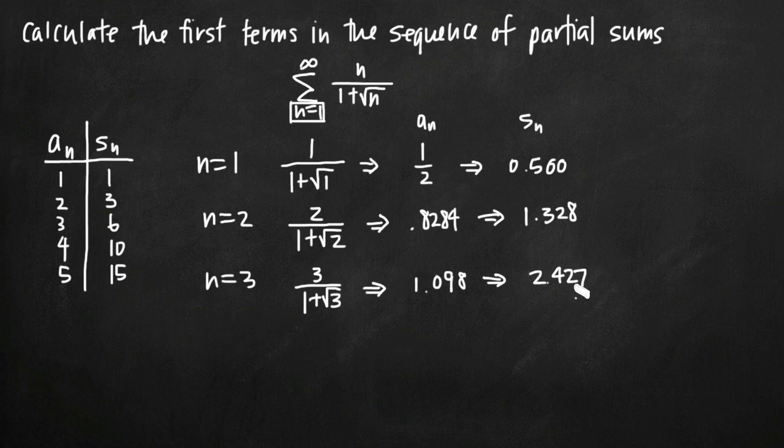n equals 4, n equals 5, n equals 6. And we just add it to that previous sum that we found. What we'd see is that we get approximately 3.760 for n equals 4. For n equals 5, we'd get approximately 5.305. For n equals 6, we'd get approximately 7.044, and we keep going.